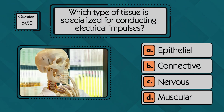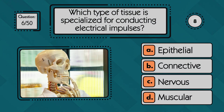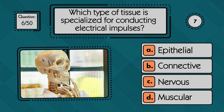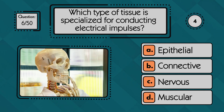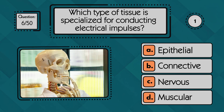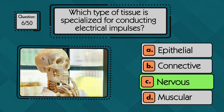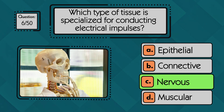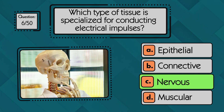Which type of tissue is specialized for conducting electrical impulses? Electrical impulses are carried by nervous tissue, which allows the body to send signals rapidly between the brain, spinal cord, and the rest of the body.